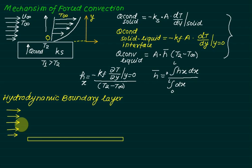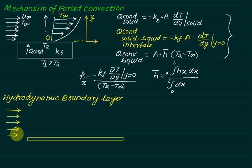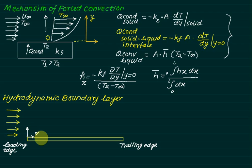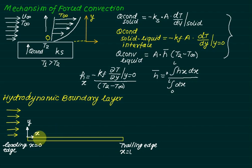Consider the flow of a fluid over a flat plate with free stream velocity U∞ and temperature T∞. The fluid can be considered as adjacent layers stacked on top of each other. The leading edge is the front edge perpendicular to the flow direction, and the trailing edge is the back edge. X and Y axes are defined at the leading edge, where x = 0 at the leading edge and x = L at the trailing edge. Assuming no-slip conditions at the wall, the velocity boundary layer grows along the plate.